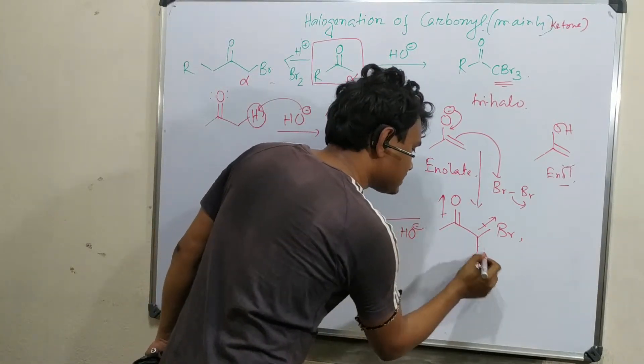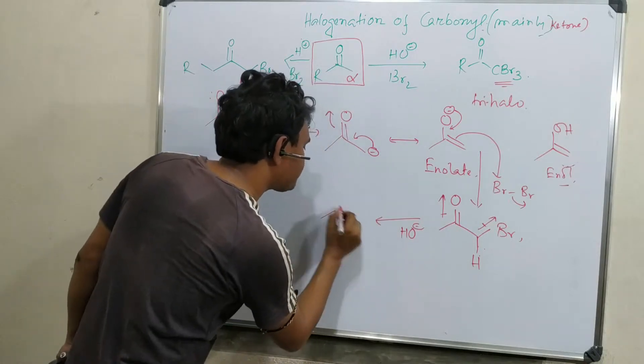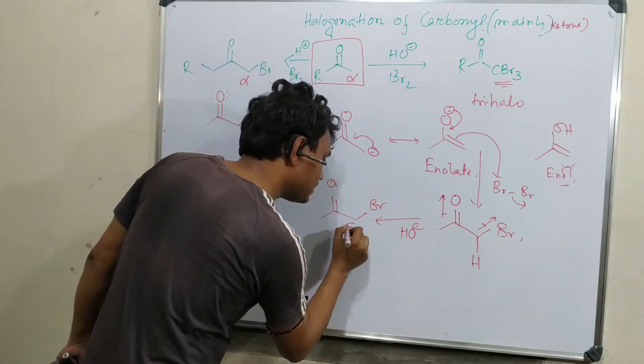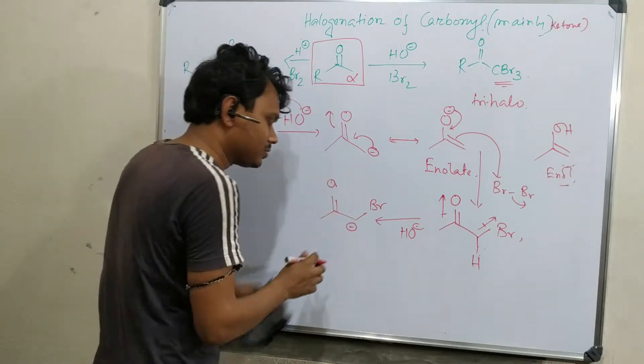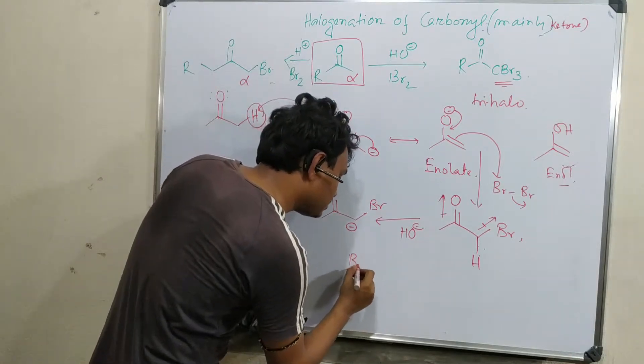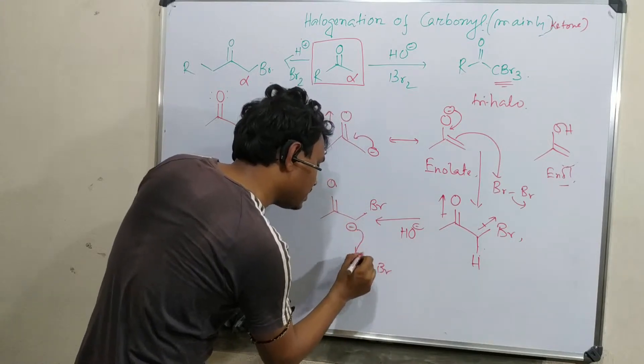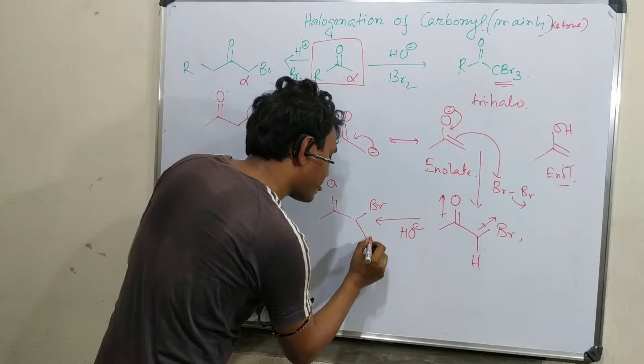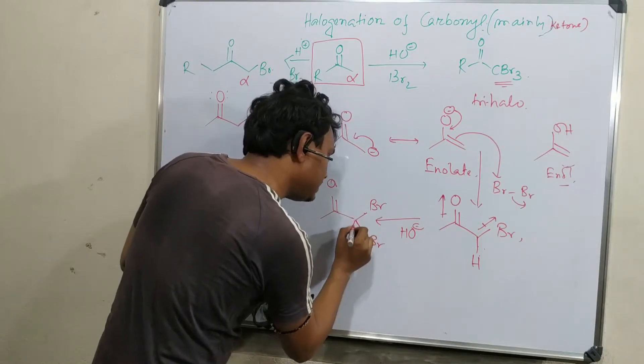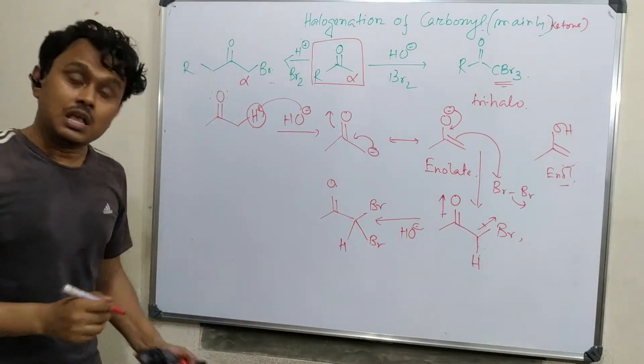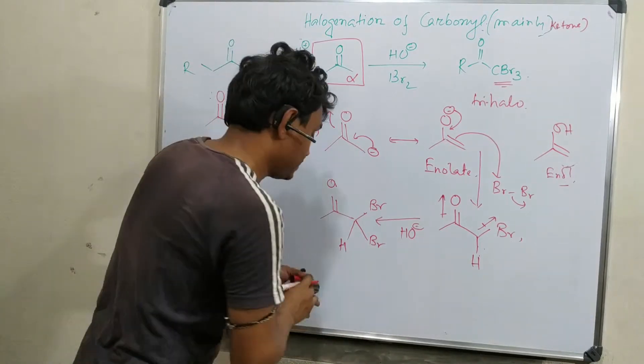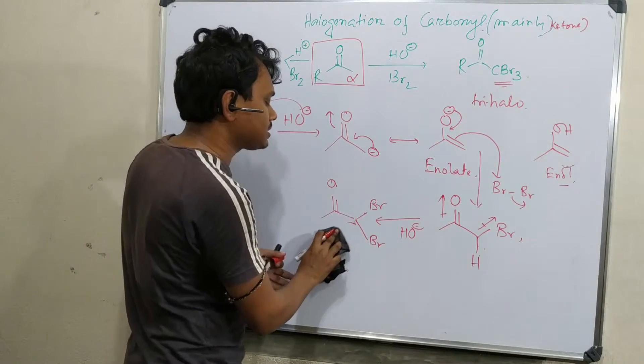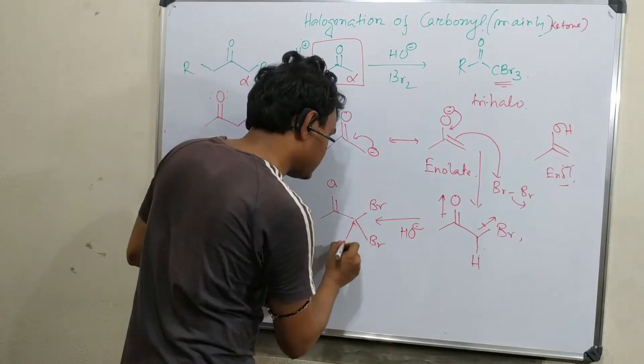That is the reason the second step is faster than the previous one. In presence of alkali, same process: this generates a carbanion resonance stabilized with the carbonyl group. That reacts with halogen Br2 to produce another bromo derivative.